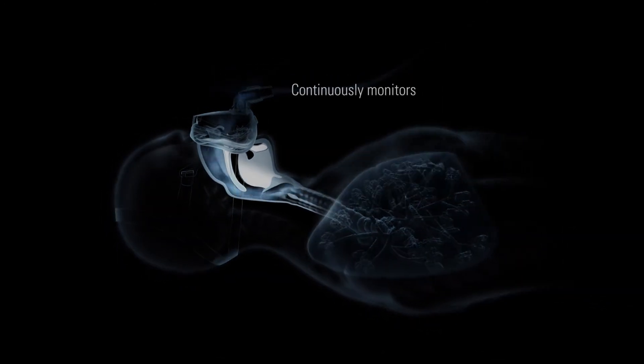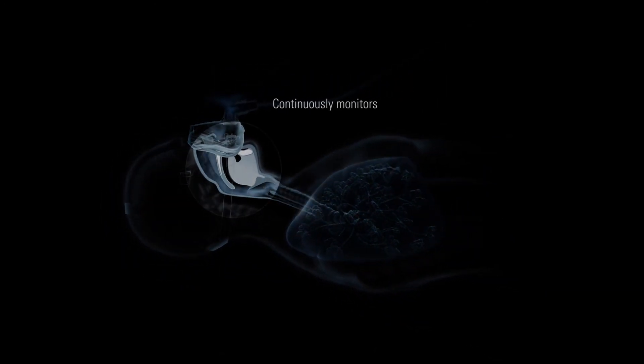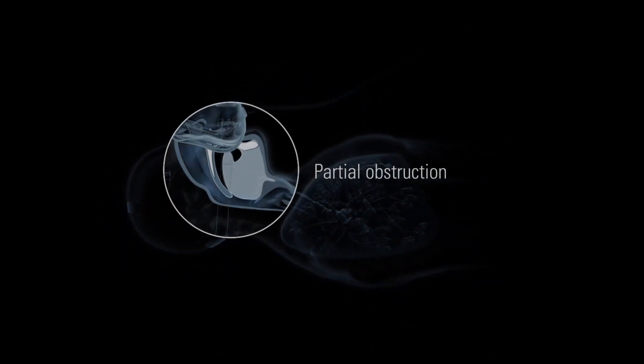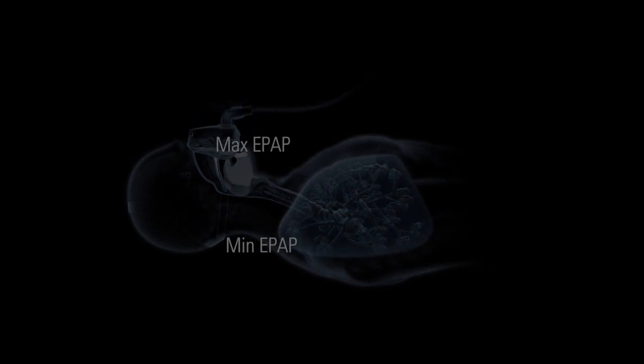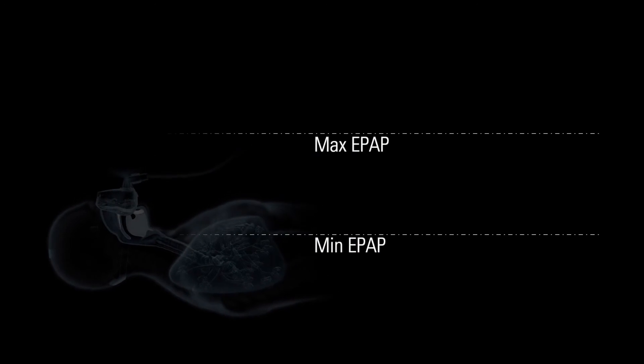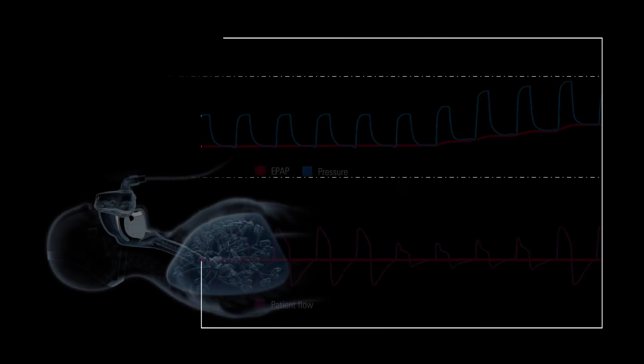Auto-EPAP technology continuously monitors airflow in the upper airway. If partial or full obstructions are detected, it will automatically calculate the severity of the event and then adjust the expiratory pressure within the minimum and maximum EPAP settings.